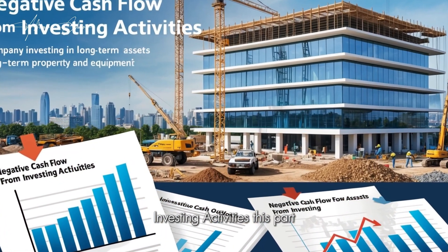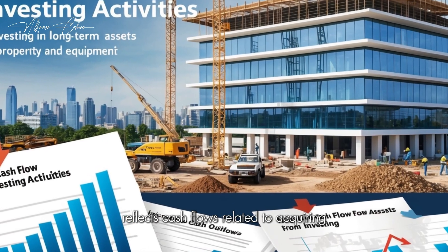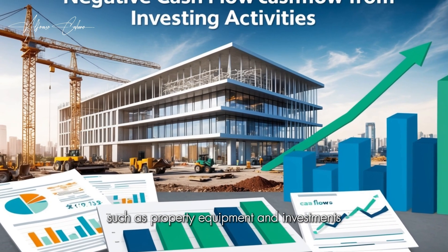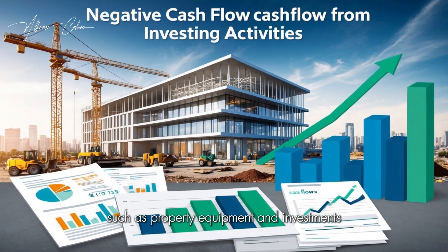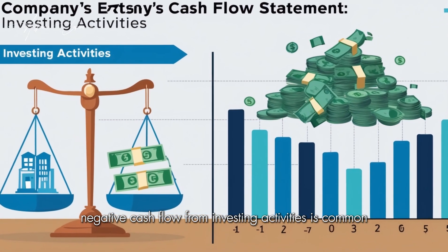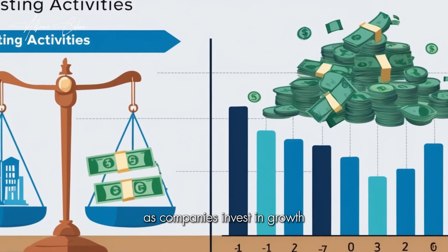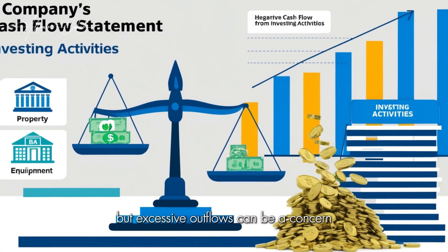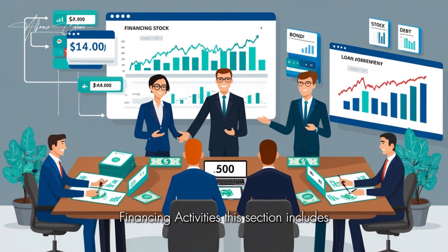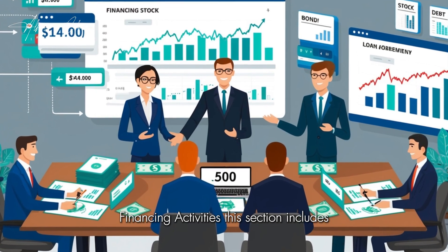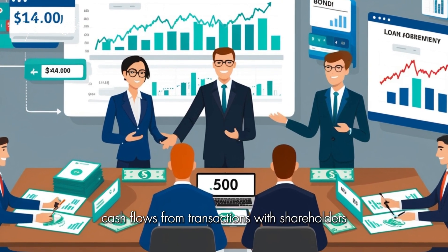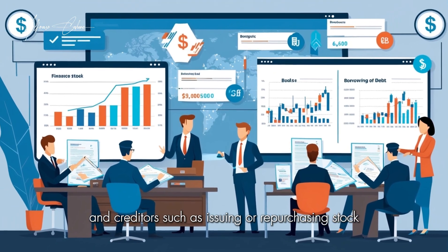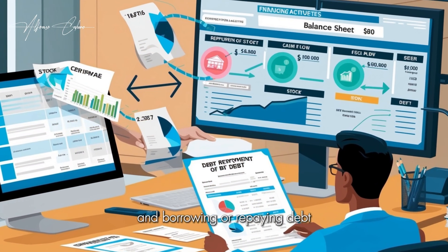Investing Activities reflects cash flows related to acquiring or disposing of long-term assets, such as property, equipment, and investments. Negative cash flow from investing activities is common as companies invest in growth, but excessive outflows can be a concern. Financing Activities includes cash flows from transactions with shareholders and creditors, such as issuing or repurchasing stock and borrowing or repaying debt.